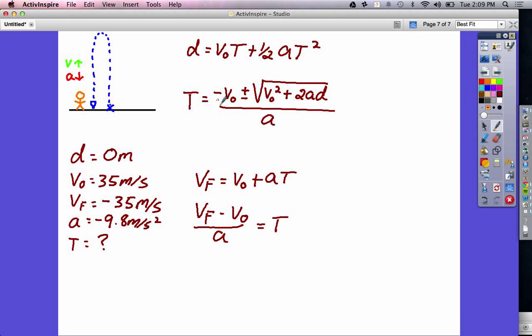Well, if you take a look up here, what you end up with, if you simplify the equation slightly, because you'll see that the displacement is zero, so this whole 2AD goes away, is negative V0 plus or minus the square root of V0 squared, which means plus or minus V0. So what that would look like is negative V0 minus V0, because if we added V0, they would cancel, all divided by A. So we take V0, but the opposite of it, so instead of 35, negative 35 minus 35, just like we have down here, all divided by acceleration, we get time. They're actually the exact same equation.